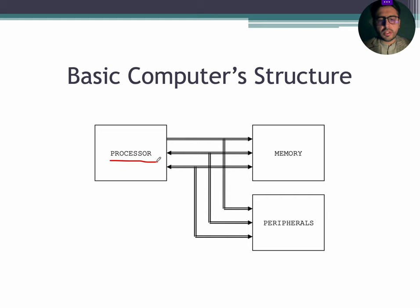The processor consists of control unit for controlling the operation of the computer, arithmetic logic unit for data processing, registers for temporary internal storage, and CPU interconnections for communication among the control unit, ALU, and the registers.